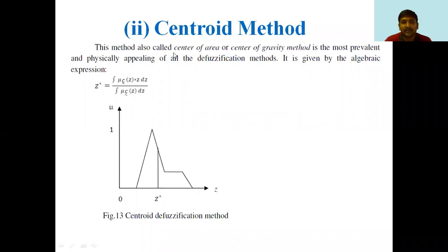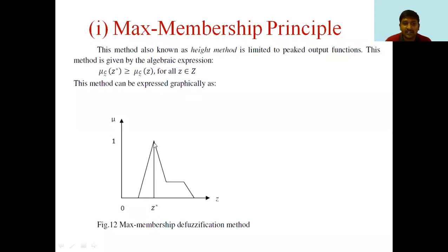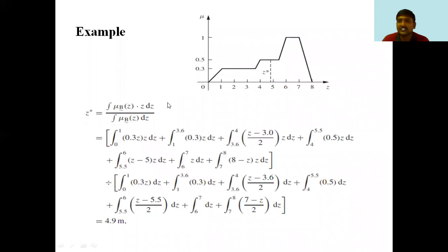Similarly, the centroid method, also called center of area or center of gravity method, is the most prevalent and physically appealing of all defuzzification methods. It is given by the algebraic expression: z* = integral of mu_c(z) · z · dz divided by integral of mu_c(z) · dz. In this method z* is not a maximum value but is calculated using the full integral expression.